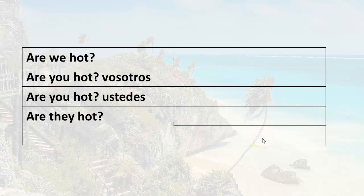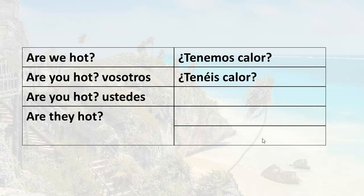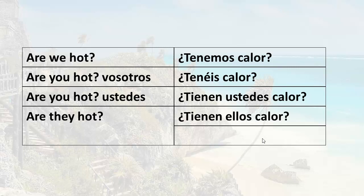Now with the plural subject pronouns. Are we hot? Tenemos calor. Are you hot using vosotros? Tienes calor. Are you hot using ustedes? Tienen ustedes calor. Are they hot? Tienen ellos calor, or tienen ellas calor.